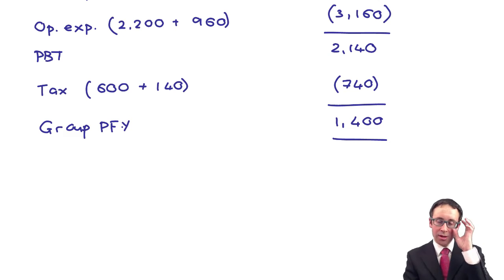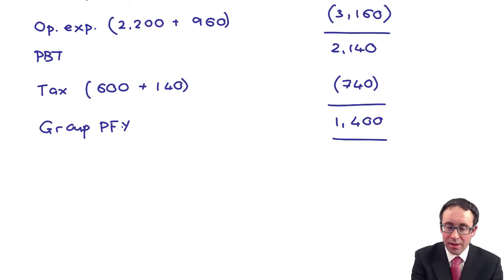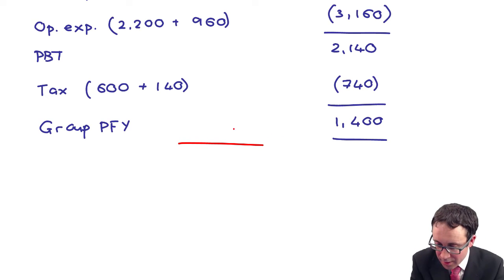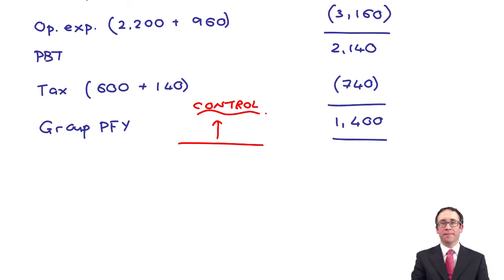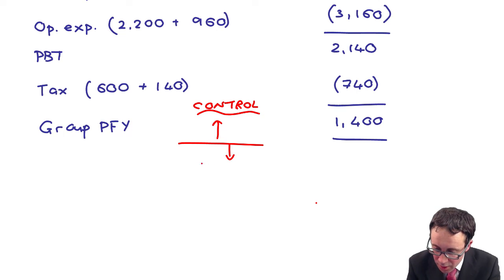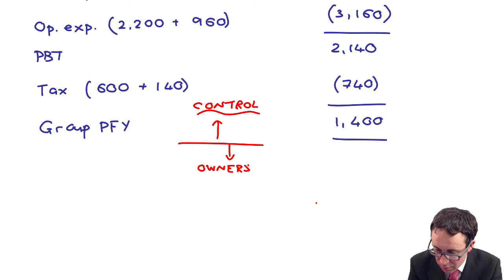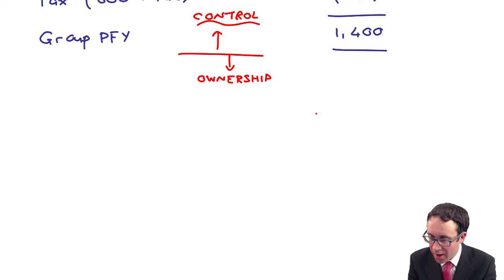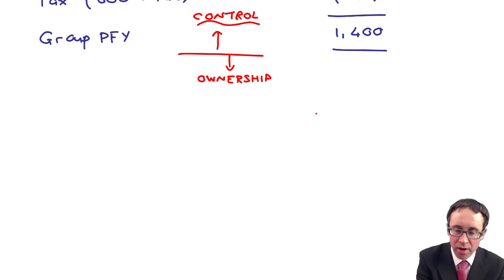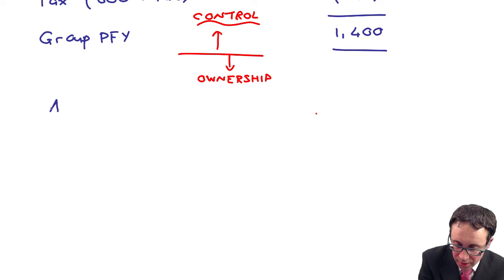That's 100% of the parent and 100% of the subsidiary. So, everything above that is demonstrating what we control. Below that is where we go through and demonstrate ownership — what do we actually own as the parent of that 1,400? What's attributable to the owners of the parent and what's attributable to the non-controlling interest?